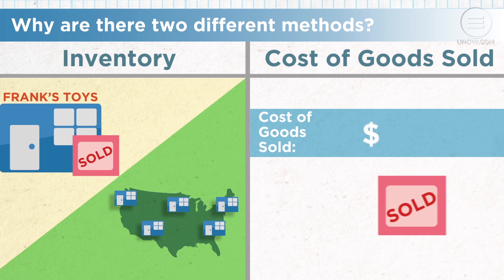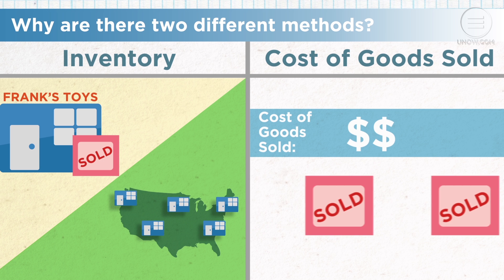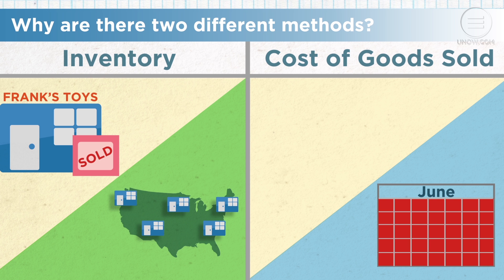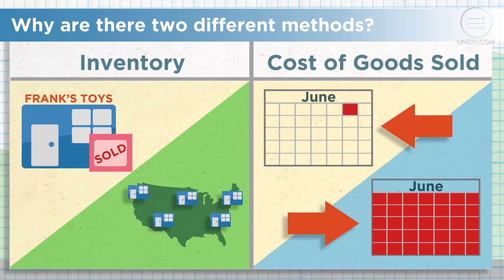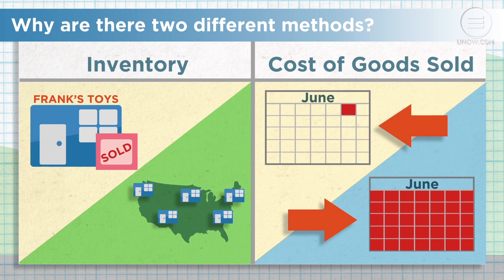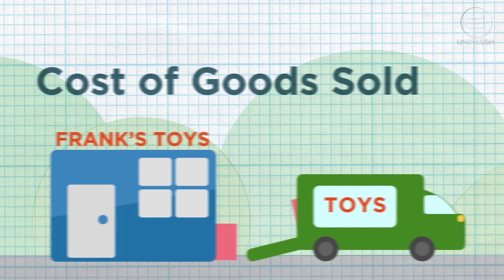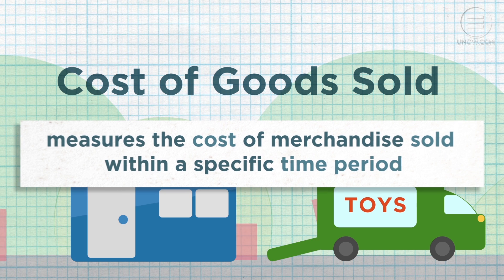Second, all businesses use their inventory system to calculate their cost of goods sold, but some businesses need an updated figure on hand at all times while others don't. How often your business needs access to that information will affect which inventory system you'll use.